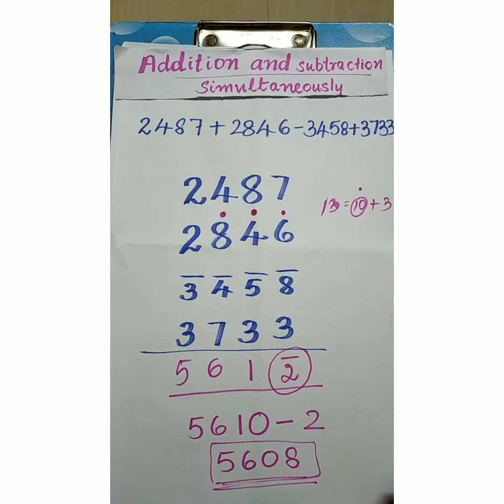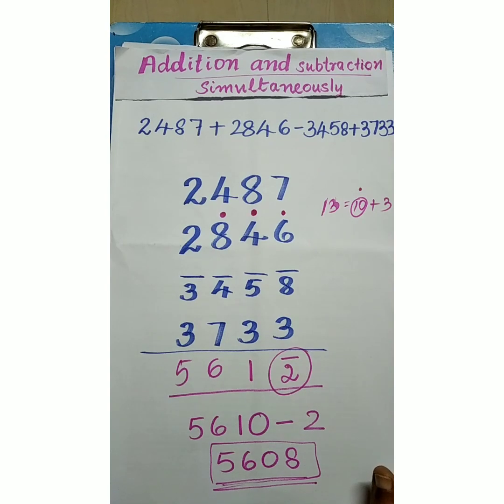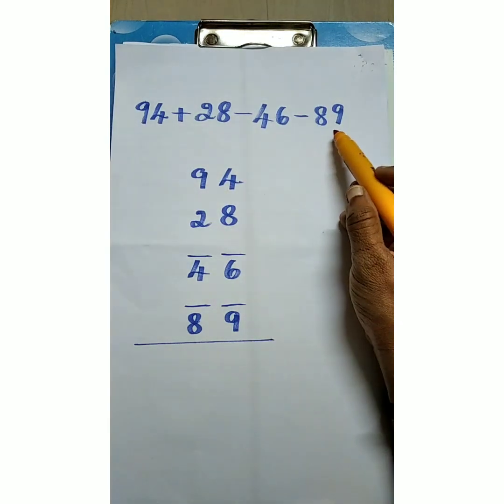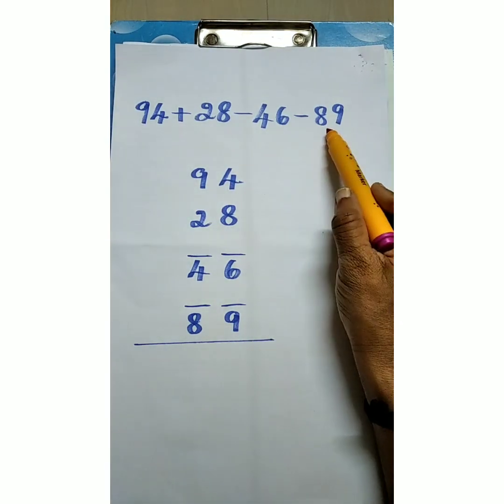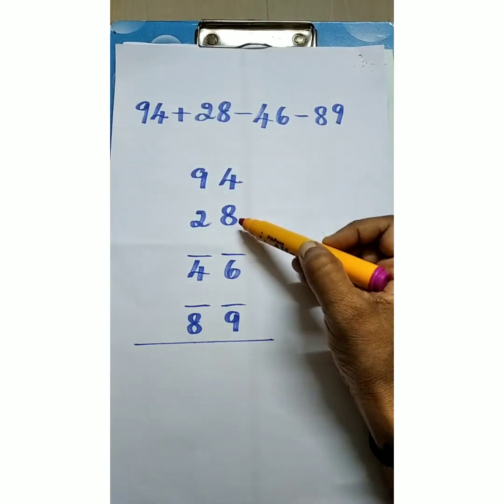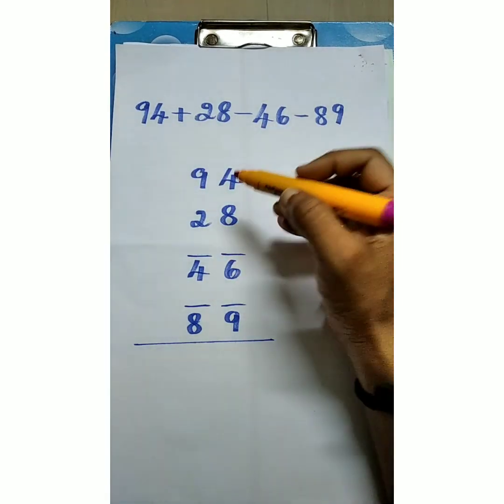Let us see one more example. 94 plus 28 minus 46 minus 89. Here these two numbers are negative. And these two numbers are positive. In order. I written here. Let us start.